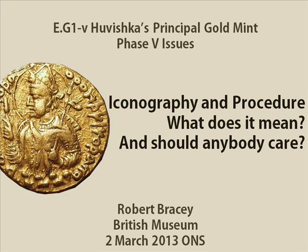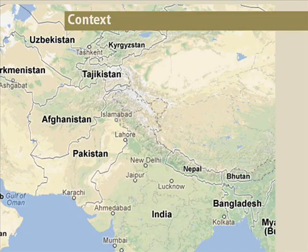The particular bit I'm looking at is EG1B, which is Huvishka's Principal Gold Mint, the Phase 5 issues. I'll be primarily looking at the full units. Just to put this in context, this is Northern India, Pakistan, Afghanistan, and the Central Asian States — roughly the part of the world you're talking about when you're talking about the Kushans.